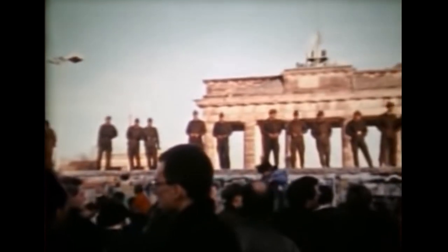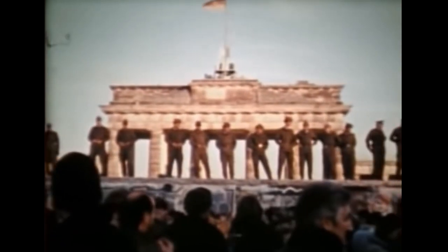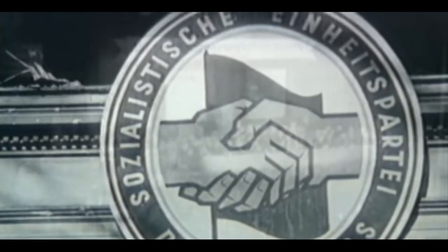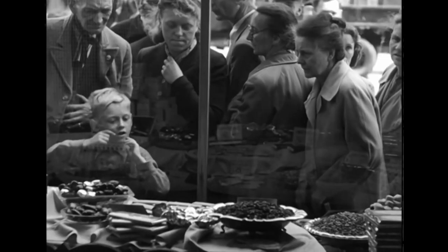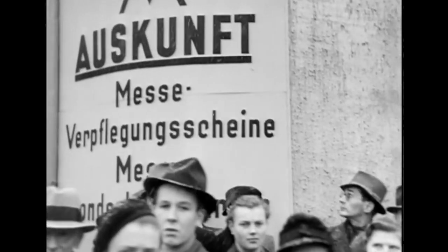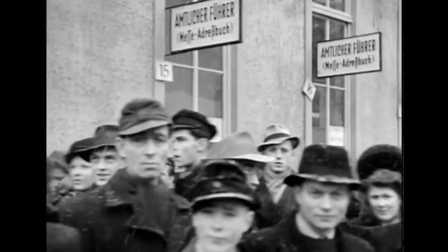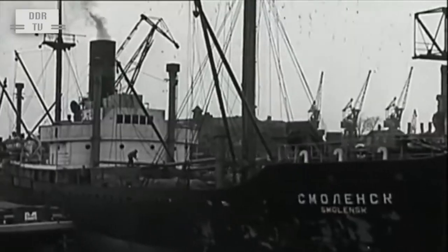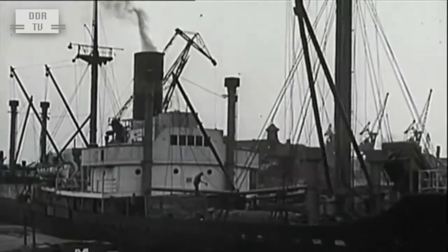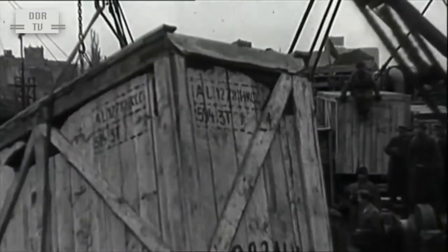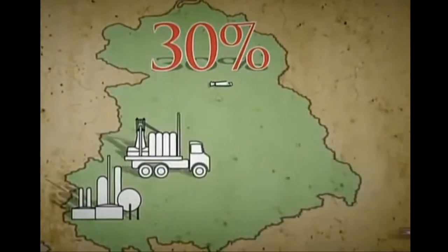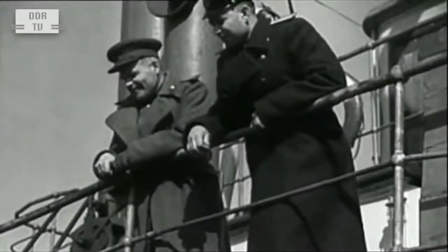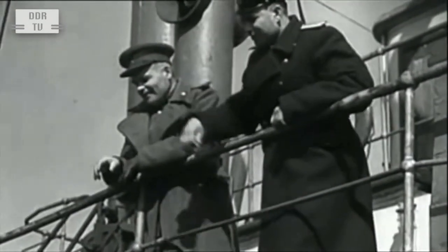Until 1989, the GDR was governed by only one party, the Socialist Unity Party of Germany, the SED. The German war reparations owed to the Soviets impoverished the Soviet zone of occupation and severely weakened the East German economy. Between 1945 and 1946, the Soviets confiscated and transported to the USSR approximately 33% of the GDR's industrial plant, and by the early 1950s had extracted some $10 billion worth of reparations in agricultural and industrial products.